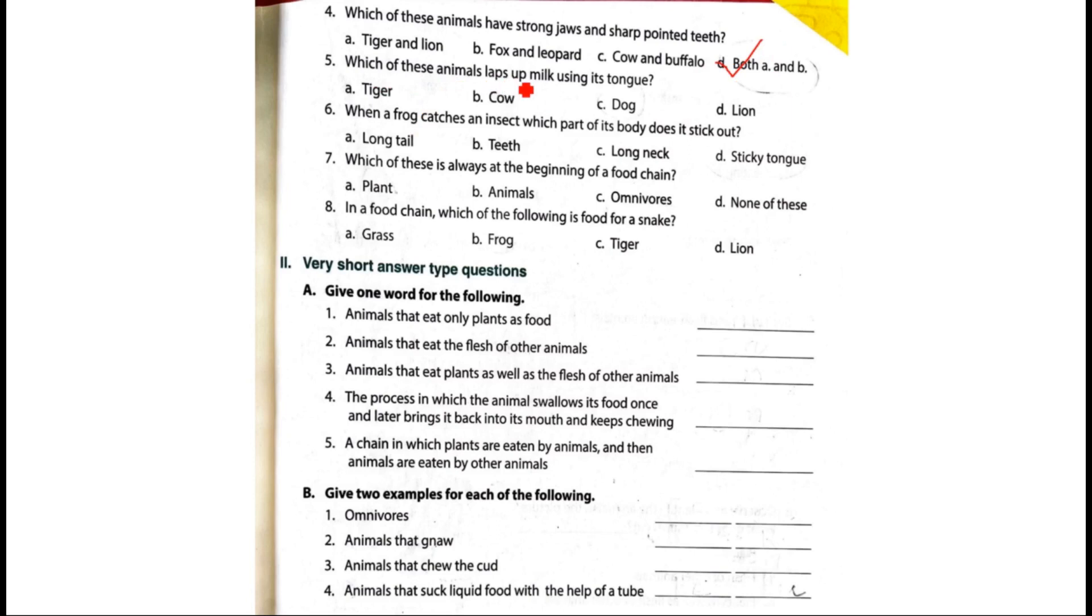Which of these animals laps up milk using its tongue? Tiger, cow, dog and lion. And the answer is dog. When a frog catches an insect, which part of its body does it stick out?